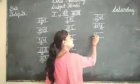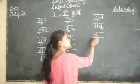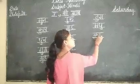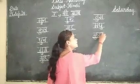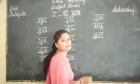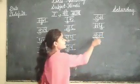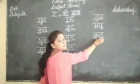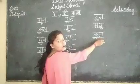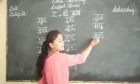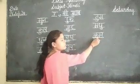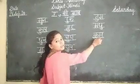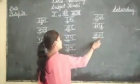क, उ, म — क्या बने हैं? क, उ, म — कुम। क्या है? क, उ, म — कुम।